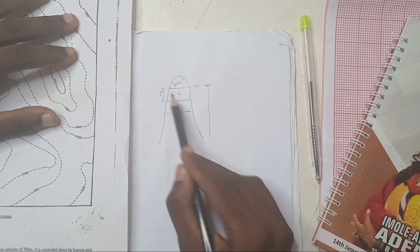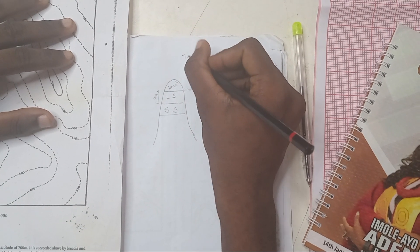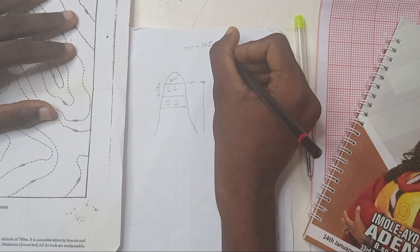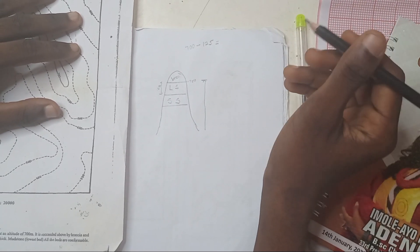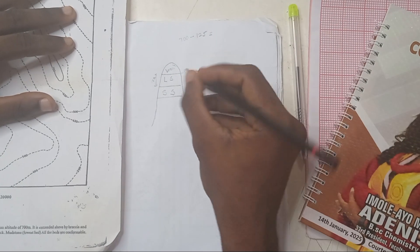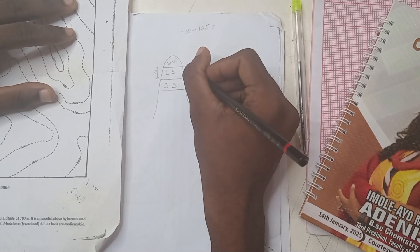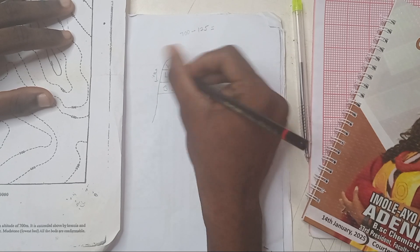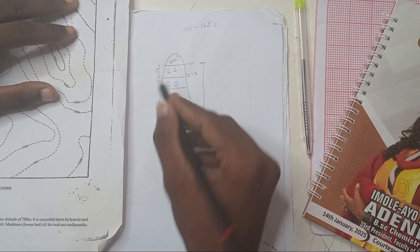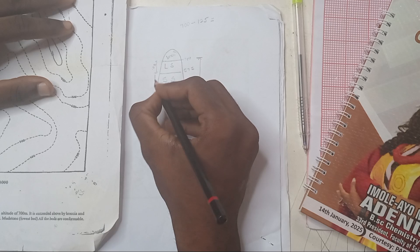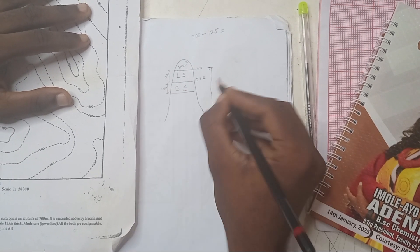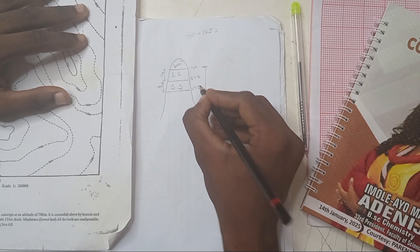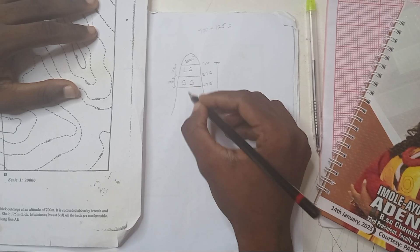So the upper bedding plane of the limestone bed is at 700 meter. So what is the lower bedding plane if this is 125 meter thick? That would be 700 minus 125, which is 575. So from 700 to 575, that is where you can find limestone.